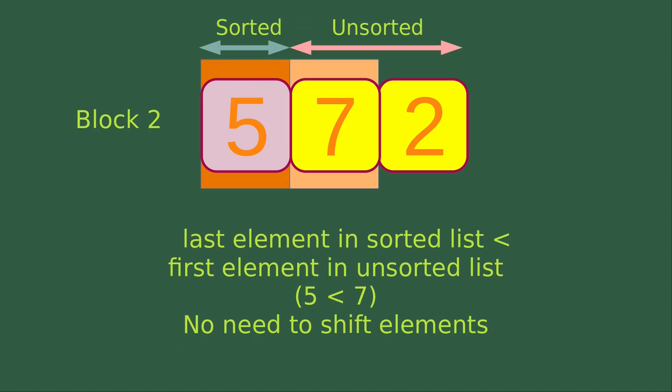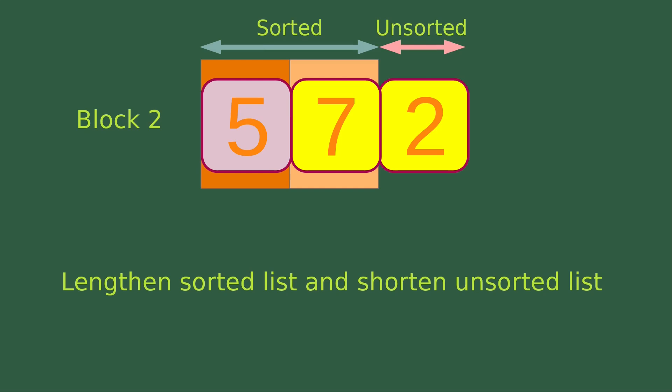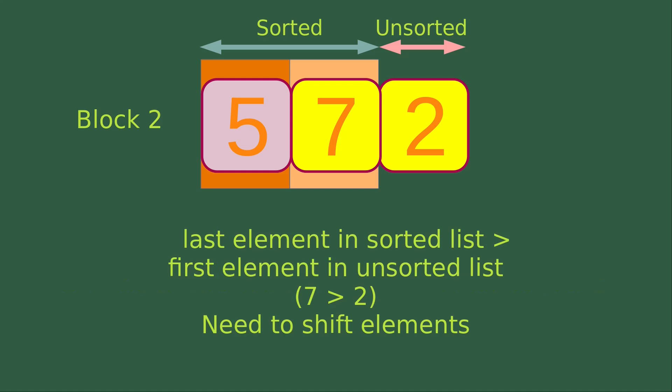Next, we go to Block 2 to do the insertion sort. The first element in Block 2 becomes the sorted list and the remaining elements are put in the unsorted list. We see that the last element in the sorted list is less than the first element in the unsorted list — 5 is smaller than 7 — so we don't need to do the shifting. We lengthen the sorted list and shorten the unsorted list, so now the sorted list has two elements while the unsorted list has one. In the next round, the last element in the sorted list is larger than the first element in the unsorted list — 7 is larger than 2 — so we need to shift elements.